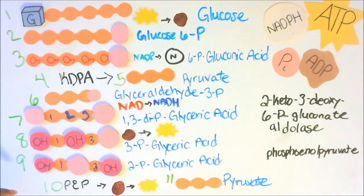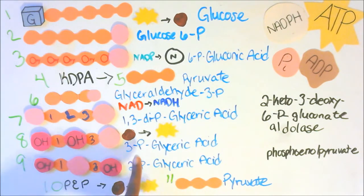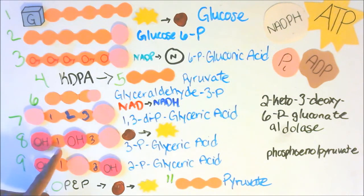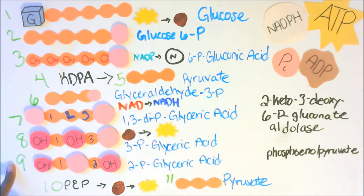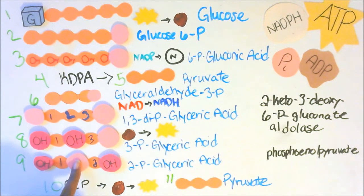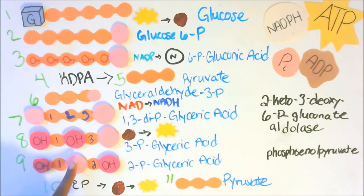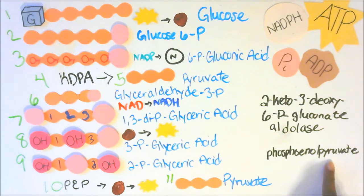For 3P glyceric acid, our eighth molecule: on the third carbon we have a phosphate group — 1, 2, 3 — on the third carbon a phosphate group; on the second carbon is an OH group and on the first carbon is an OH group. Our ninth molecule is 2P glyceric acid: on the first carbon there is an OH, on the second carbon there is a phosphate group, and on the third carbon there is an OH. Our tenth molecule is PEP or phosphoenolpyruvate, and our last one is pyruvate.